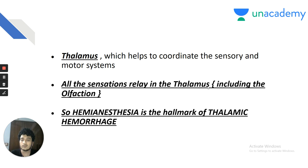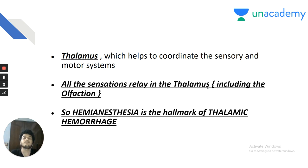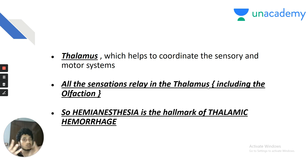Hemi-anesthesia or hemisensory loss is the hallmark of thalamic hemorrhage, as all sensations relay in the thalamus. Hemiparesis may also be seen in thalamic hemorrhage, but hemisensory loss occurs first. In later stages when damage becomes severe, you see hemiparesis as well. Hemisensory loss first is the hallmark of any thalamic hemorrhage.